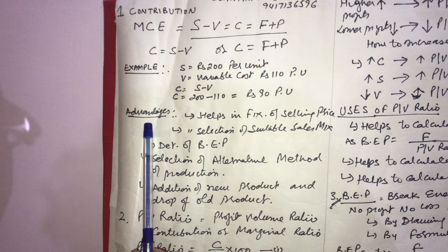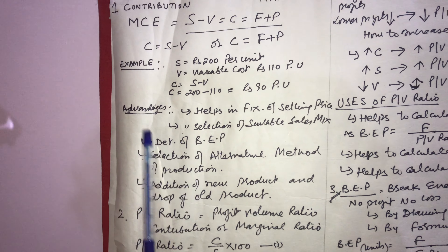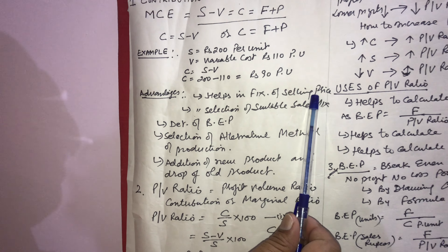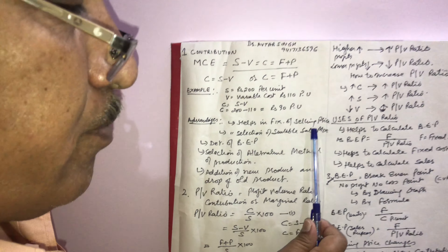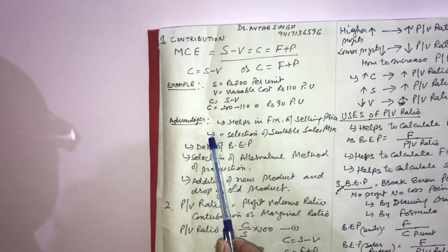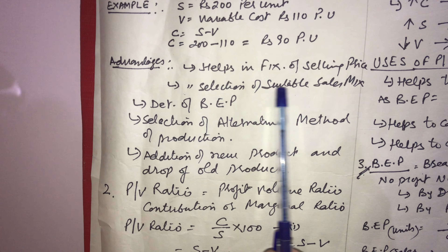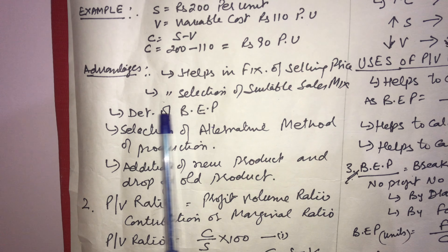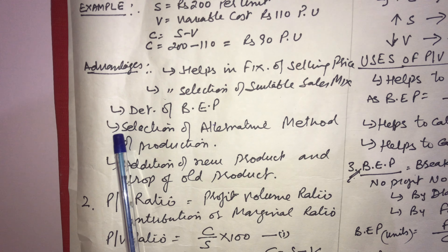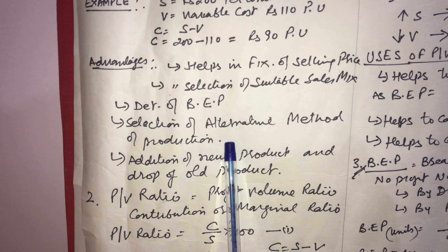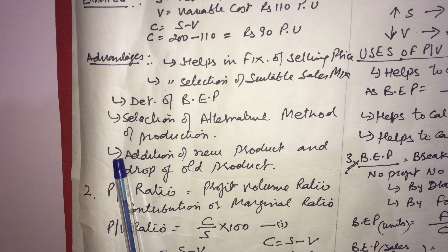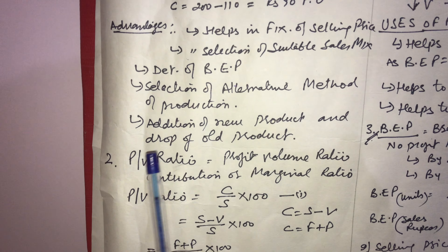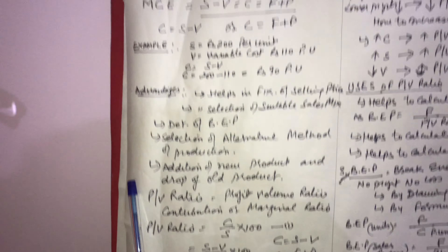Now let us discuss the advantages of contribution — why we calculate it. First, it helps in fixation of selling price. Second, it helps in selection of a suitable sales mix. Third, determination of the breakeven point. Fourth, selection of an alternative method of production. Fifth, addition of a new product and dropping of an old product. These are the advantages of contribution.